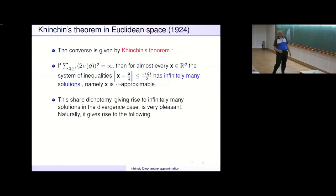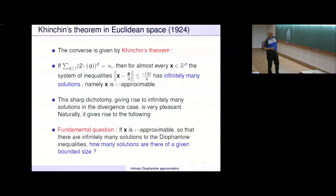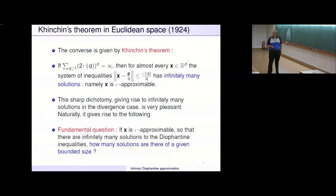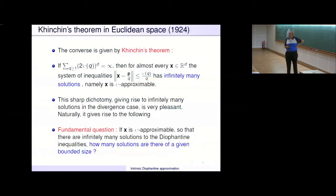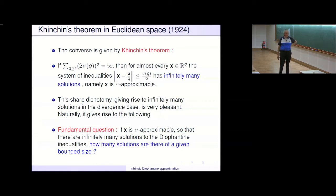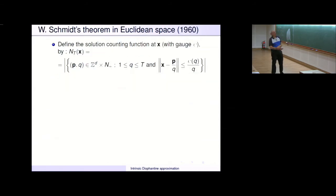Khinchin's theorem gives rise to the following fundamental question: supposing that X is psi-approximable, so you do know there are infinitely many solutions — but how many solutions are there of a given bounded size? Once you see Khinchin's theorem, this becomes a very compelling question. It's one thing to say there are infinitely many solutions, and quite another to say that up to size T you have so many. That problem was solved only 40 years later by a remarkable result of Wolfgang Schmidt.